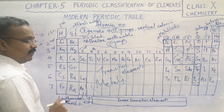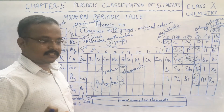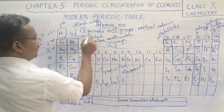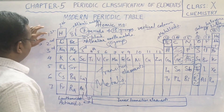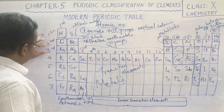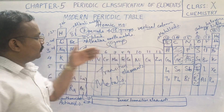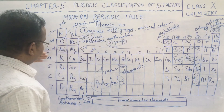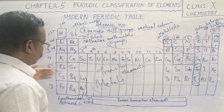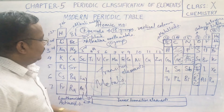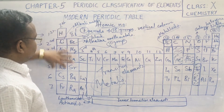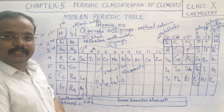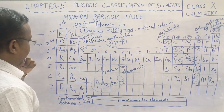To summarize: we have seven periods — these are horizontal rows — and 18 groups, which are vertical columns. Periods go horizontally and groups go vertically in the modern periodic table.